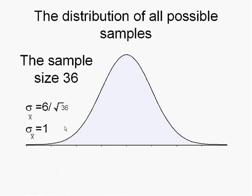Also, we know that the distribution of these possible samples is not as dispersed as the original population. If the standard deviation of the population is 6, the standard deviation of the sample means will be 1.